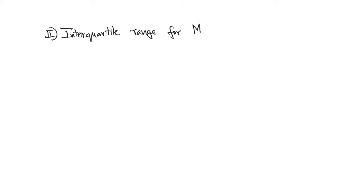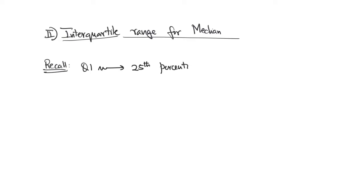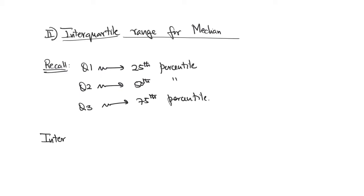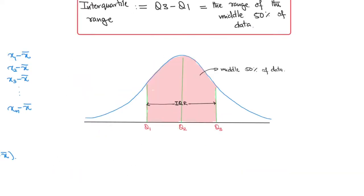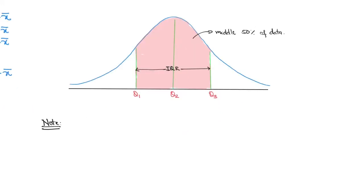We now move on to talking about the interquartile range as a measure of variability for the sample median. Recall that the first quartile was defined as the 25th percentile, the second quartile as the 50th percentile, and the third quartile as the 75th percentile. In this setting, the interquartile range is going to be the third quartile minus the first quartile — this is the range of the middle 50 percent of the data. Pictorially, the interquartile range identifies the region in red, which is the region between the two quartiles q1 and q3. It's important to note that like the median, the interquartile range is also robust to minor changes in data and to outliers.